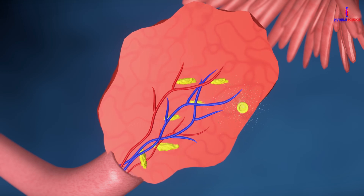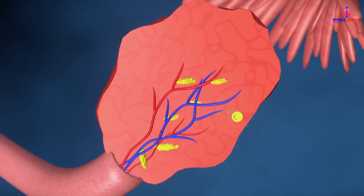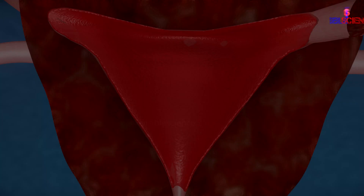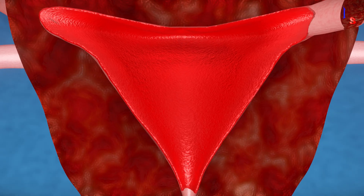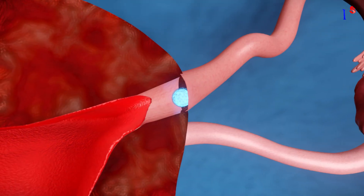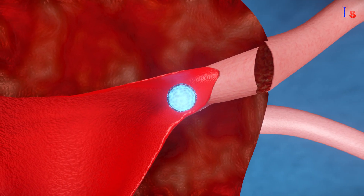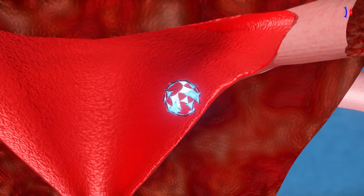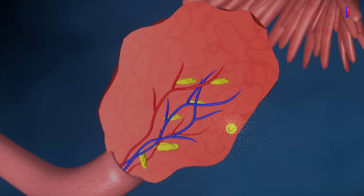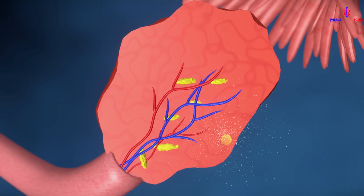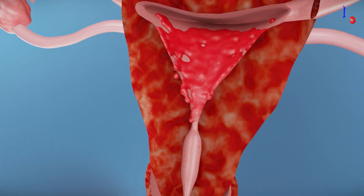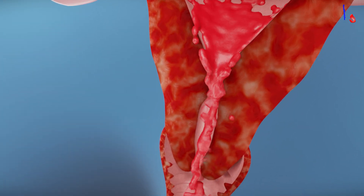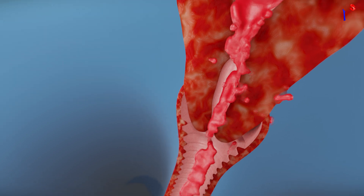After ovulation, the ruptured follicle transforms into the corpus luteum, which produces progesterone. This hormone helps prepare the uterus for pregnancy. If fertilization and implantation do not occur, the corpus luteum degenerates, hormone levels drop, and the menstrual cycle begins again.